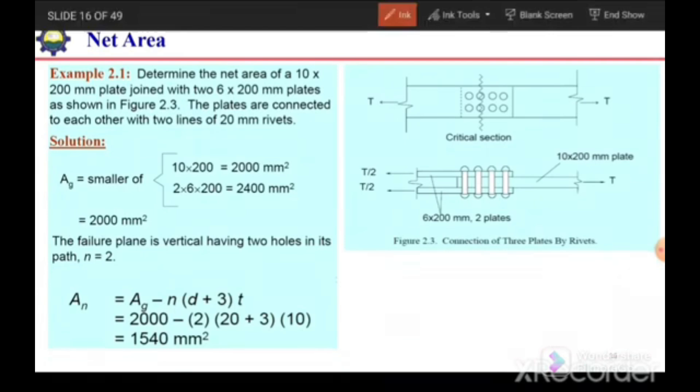Okay, let's solve one example of how we can calculate the net area at any section. Here it is stated: determine the net area of a 10 by 200 millimeter plate joined with two 6 by 200 millimeter plates as shown in the figure. The plates are connected to each other with two lines of 20 millimeter rivets.